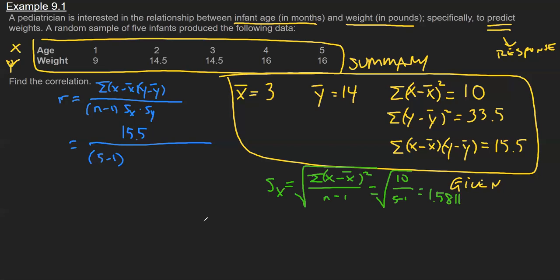And then very similarly, S sub y is the same thing, but now I'm going to use the numbers related to my random variable weight. So 33 and a half, again, over five minus one, take the radical, and that leaves me with 2.894.